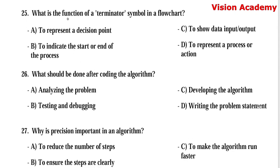Question number 25: What is the function of a terminator symbol in a flowchart? Option A, to represent a decision point. Option B, to indicate the start or end of the process. Option C, to show data input/output. Option D, to represent a process or action. Here, option B, to indicate the start or end of the process, is the right answer.